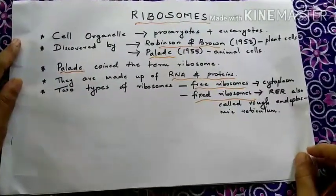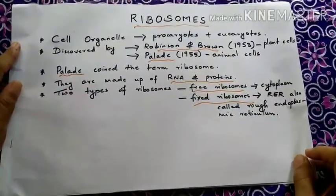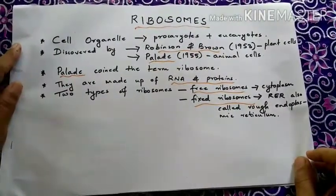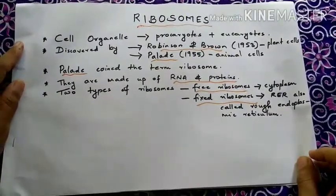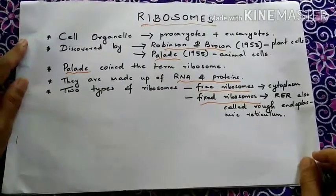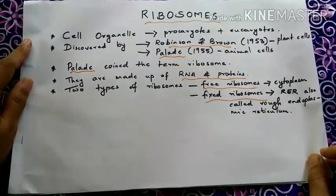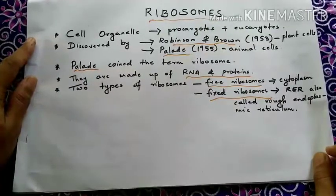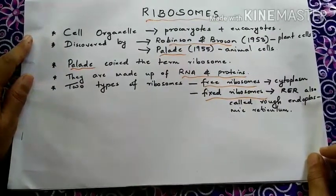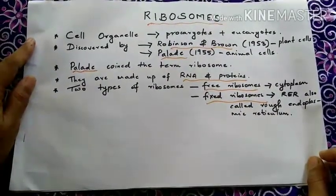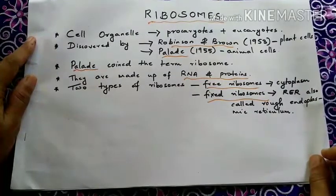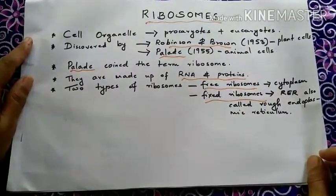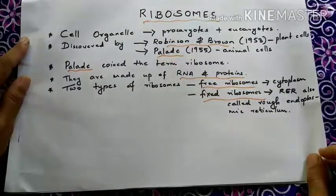Robinson and Brown in 1953 discovered ribosomes in plant cells. Palade in 1955 discovered them in animal cells, and the term ribosome was coined by Palade. These organelles are made up of ribonucleic acids, commonly called RNA, and proteins.